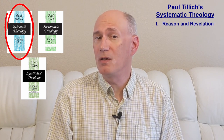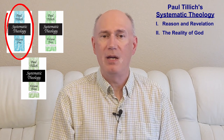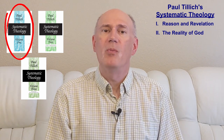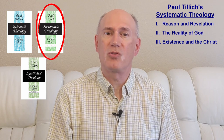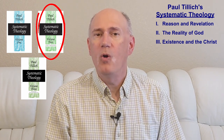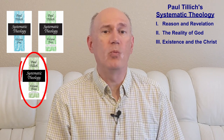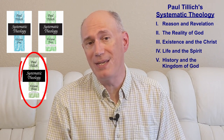Tillich's Systematic Theology has five parts. Volume 1, which we covered in the first episode, contains Part 1, Reason and Revelation, and Part 2, the Reality of God. In the last episode, we talked about Volume 2, which contains Part 3 on Existence and the Christ. This episode, we'll go over Volume 3, which contains Part 4, Life and the Spirit, and Part 5, History and the Kingdom of God.